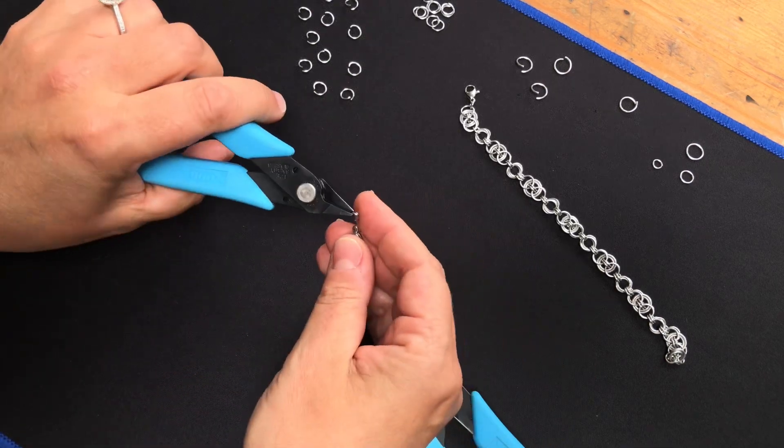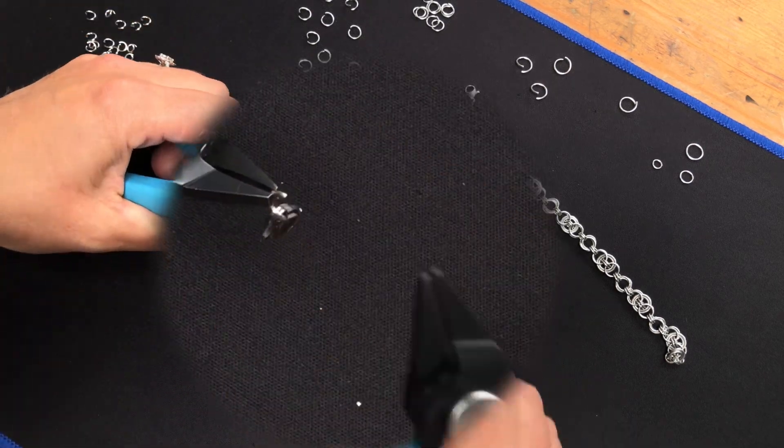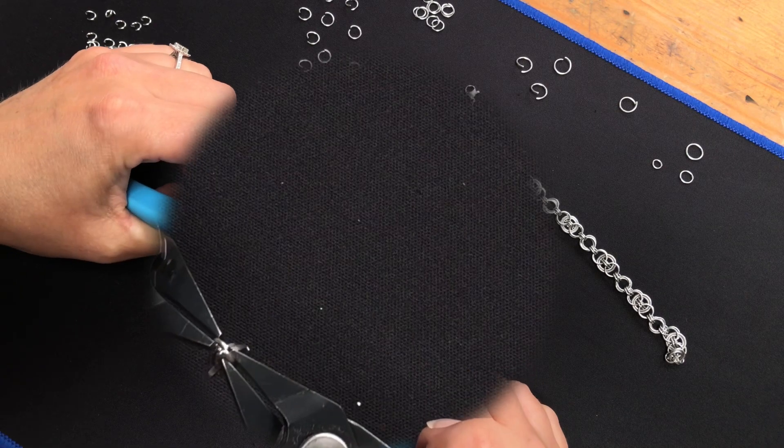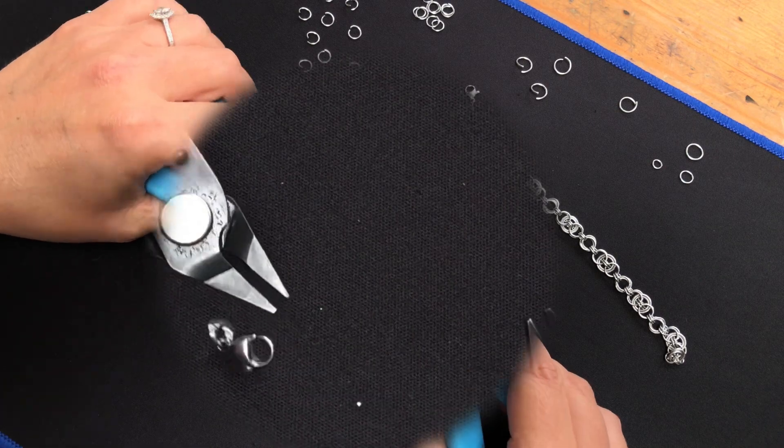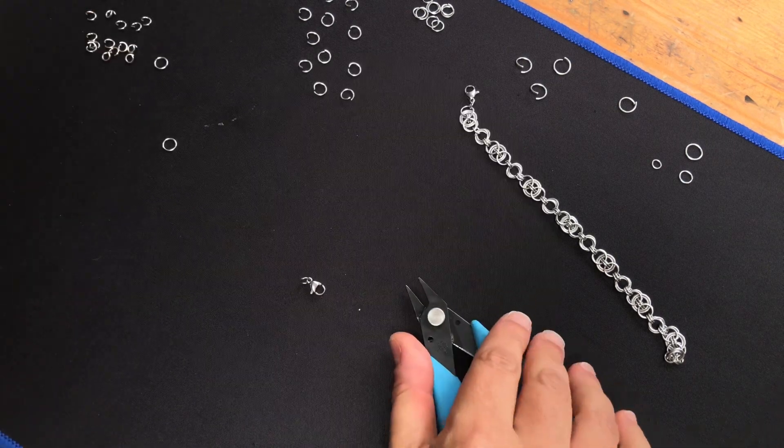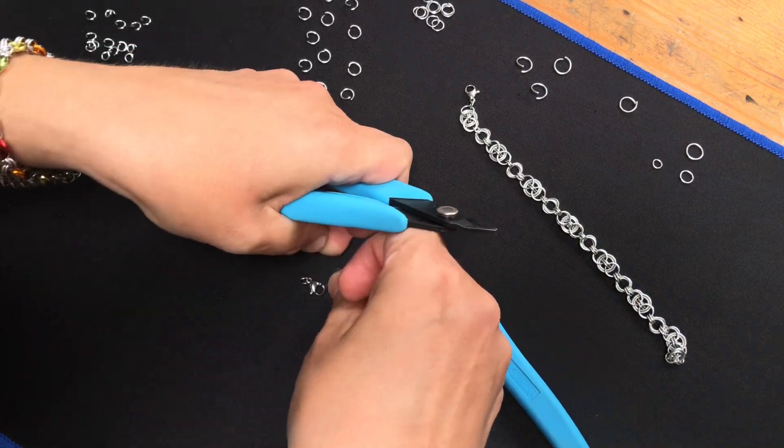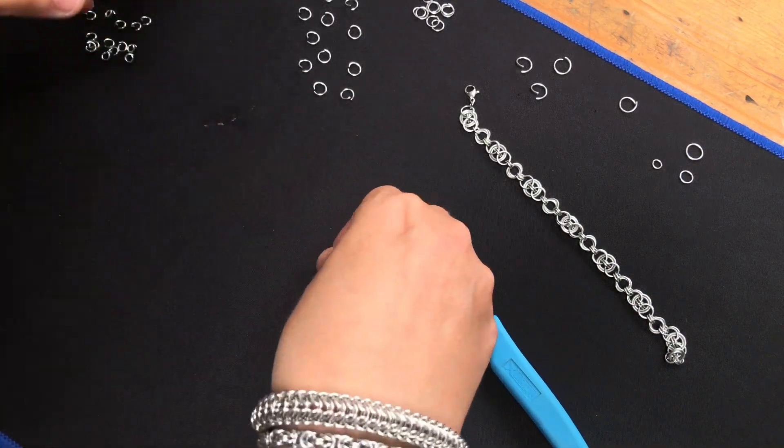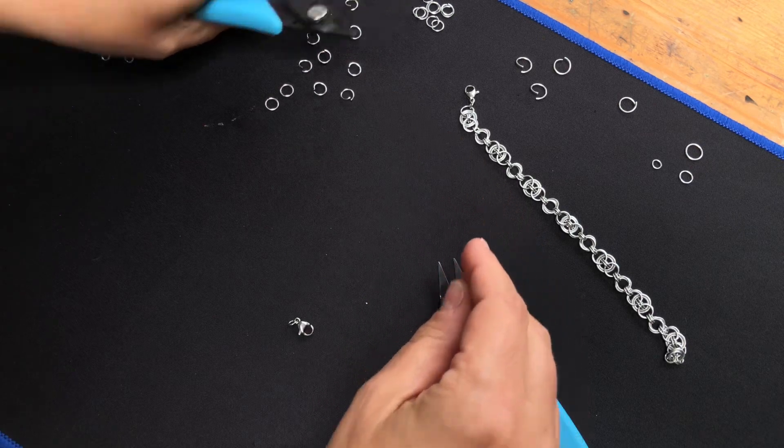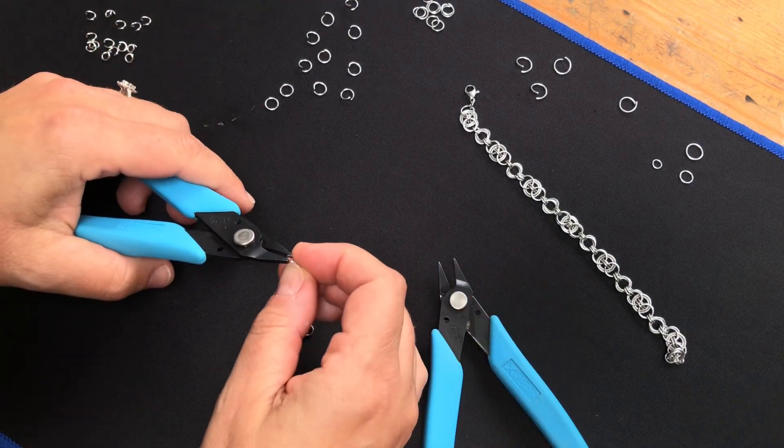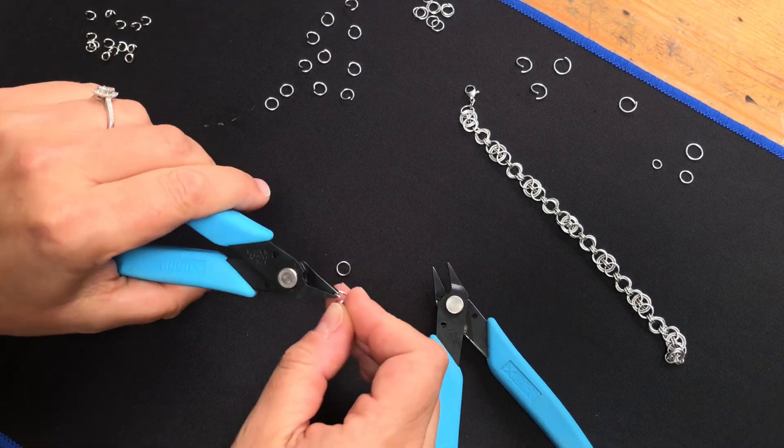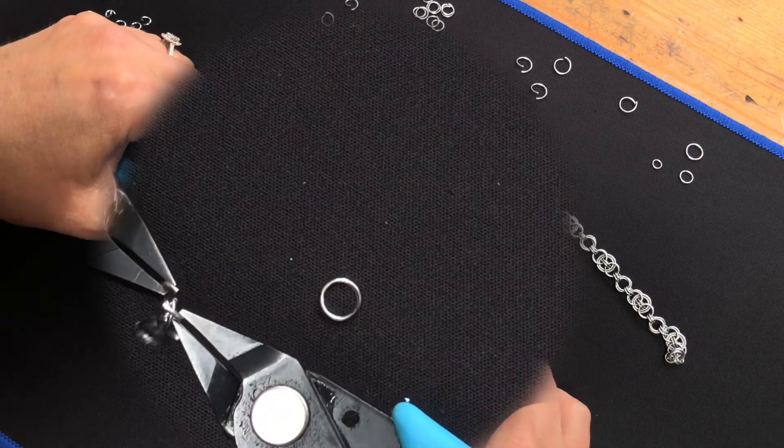And I'm going to put a small ring through it. Like so. Then, two of the medium rings. Once they're on, closed. Two medium rings through that one.